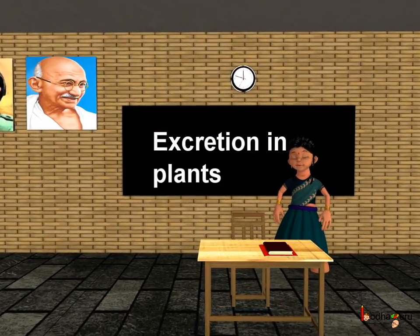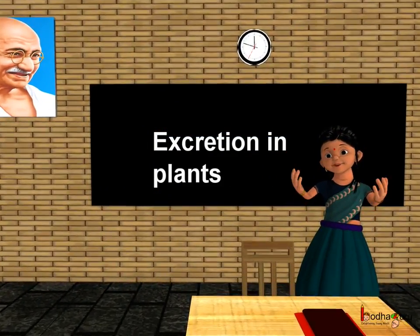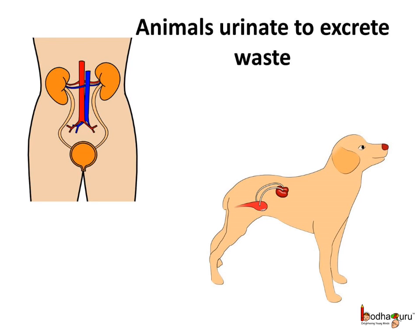Good morning children. Today we shall learn about excretion in plants. We know how humans and other animals eliminate harmful waste from their bodies through urine. A plant also is a living thing, so many wastes are produced in its body too during different processes, and the plant needs to eliminate these too.